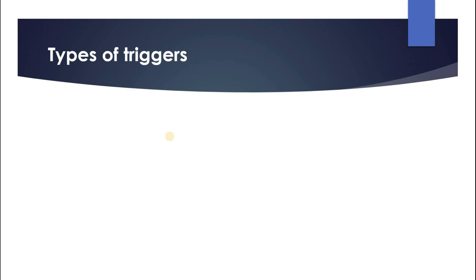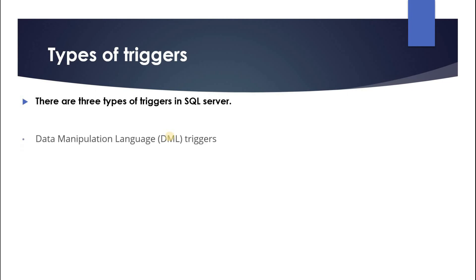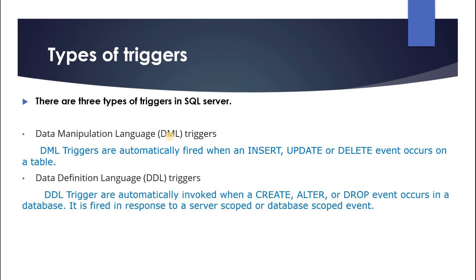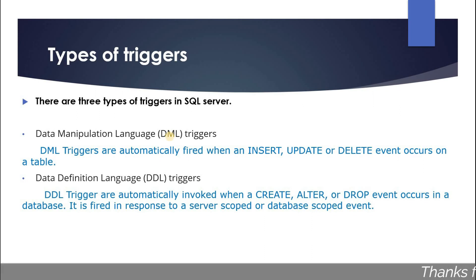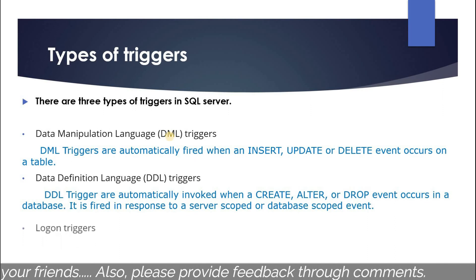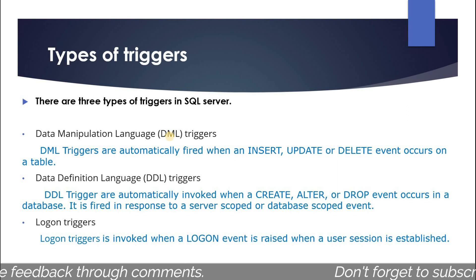Now, types of triggers. In SQL Server there are three types of triggers. First, DML (Data Manipulation Language) triggers — these are automatically fired when an INSERT, UPDATE, or DELETE event occurs on a table. Second, DDL (Data Definition Language) triggers — invoked when a CREATE, ALTER, or DROP event occurs on a database, fired in response to server-scoped or database-scoped events. Third, logon triggers — invoked when a logon event is raised when a user session is established.